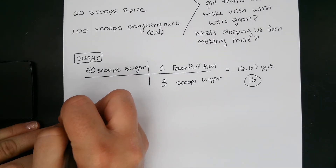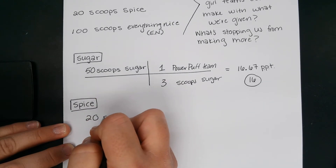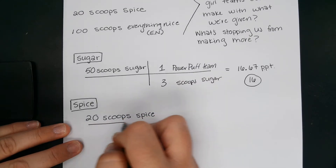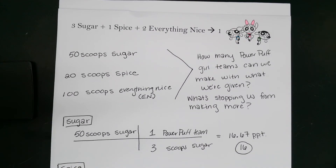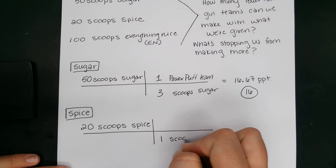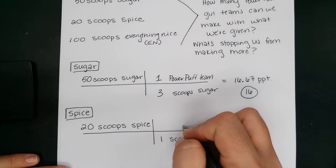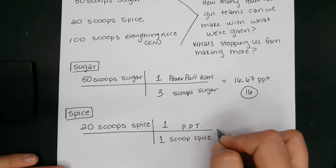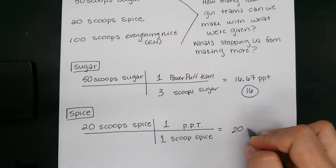Now we look at the spice. We said there were 20 scoops of spice. We convert that to see how many Powerpuff teams we can have. Our equation told us it's one scoop of spice for every one Powerpuff team. So 20 times 1 divided by 1 gives us 20 Powerpuff teams.